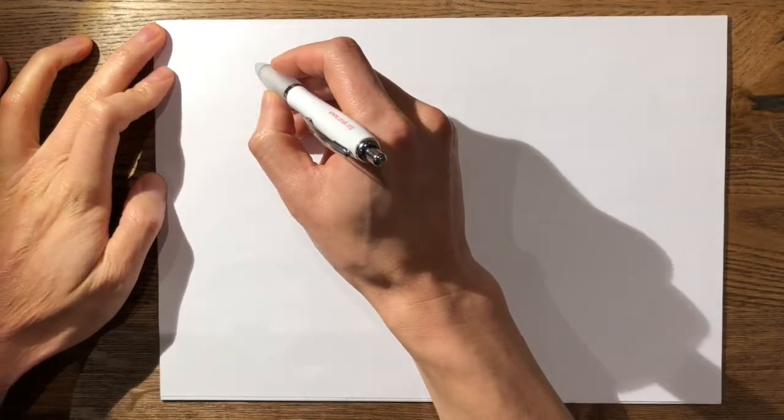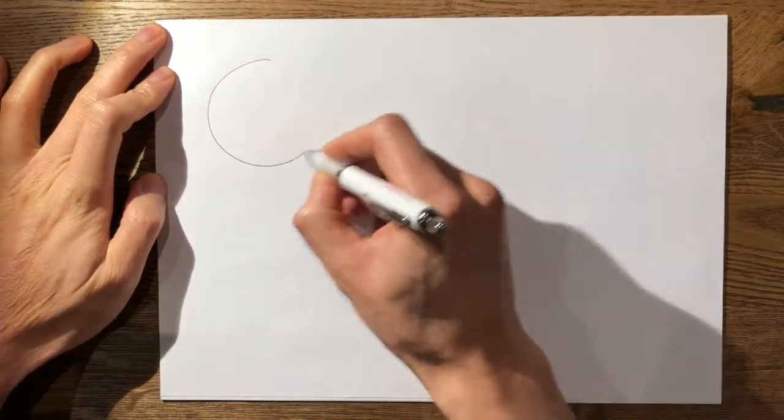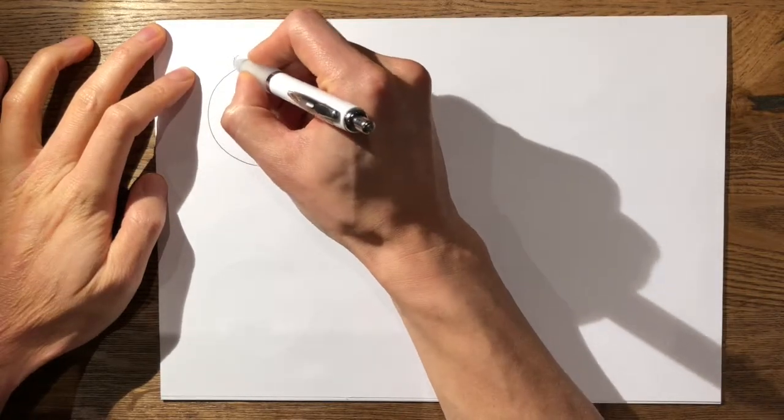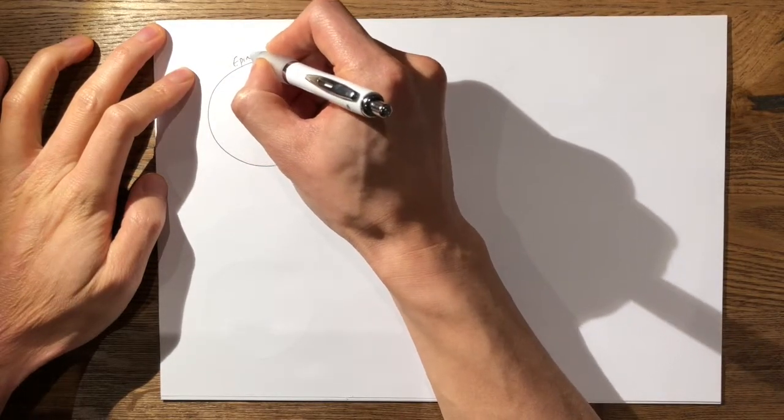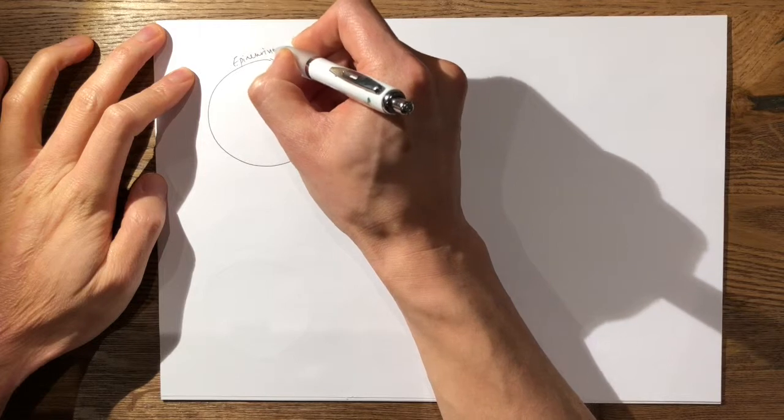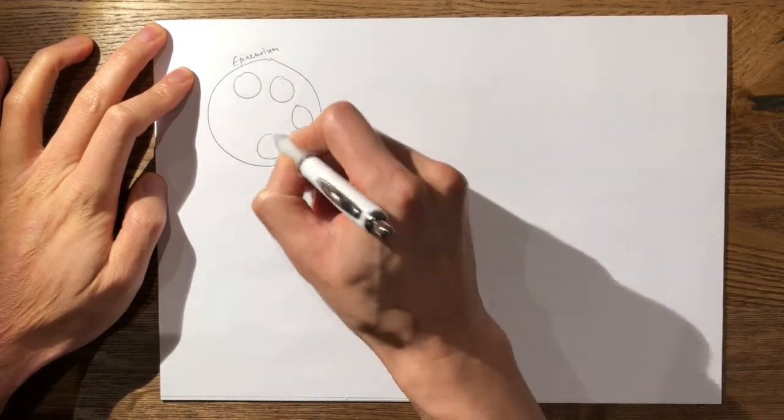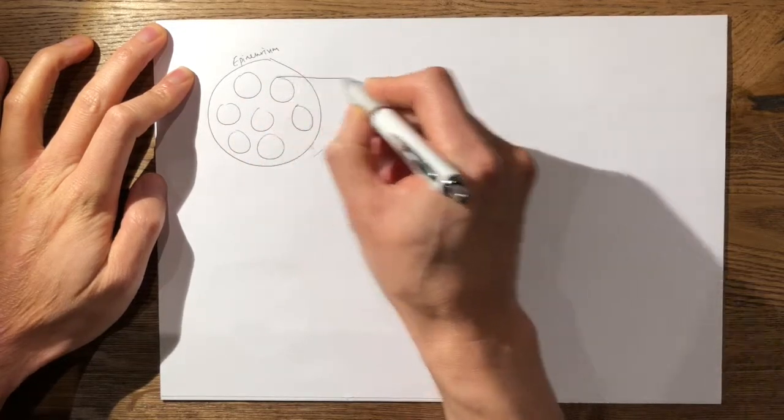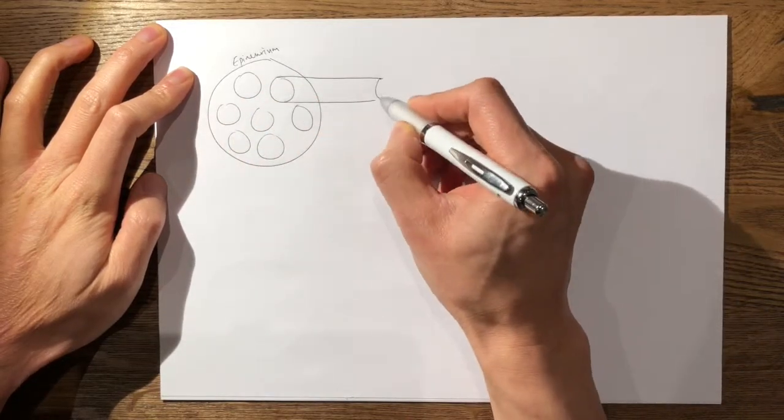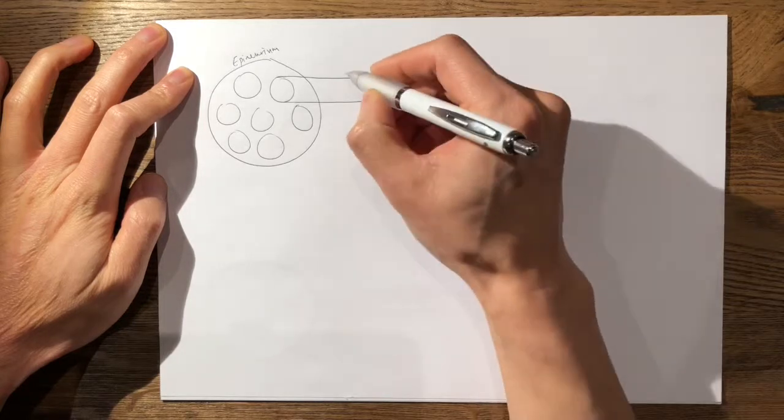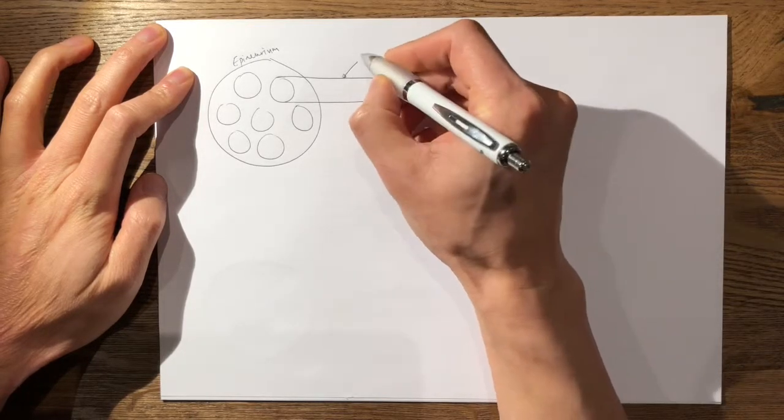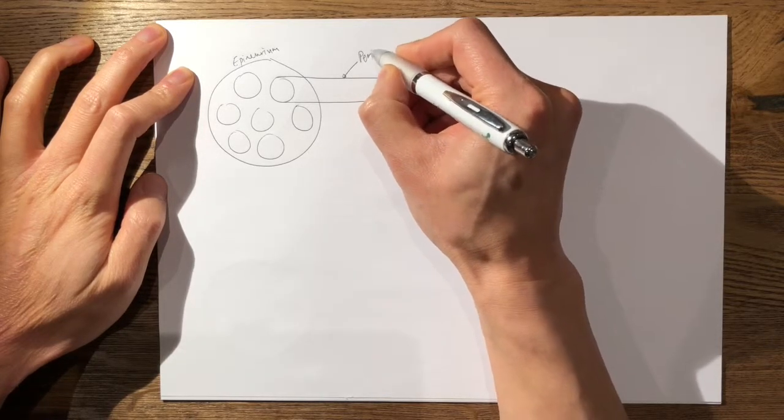First, if I start drawing a cross-section of a peripheral nerve, it is surrounded by an epineurium. Within the epineurium you have multiple bundles of nerve fibers, and each bundle of nerve fiber is called a fascicle. These fascicles are surrounded by the perineurium.